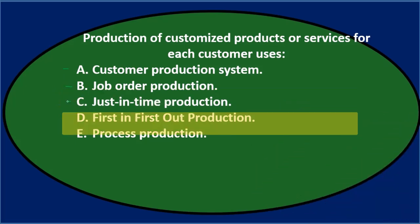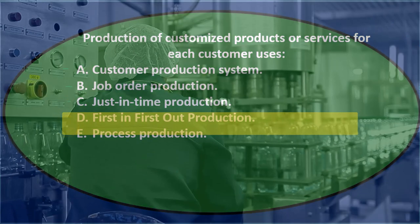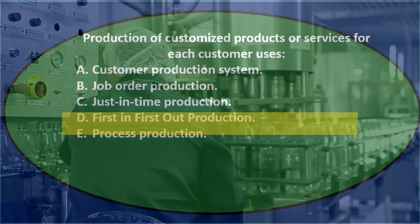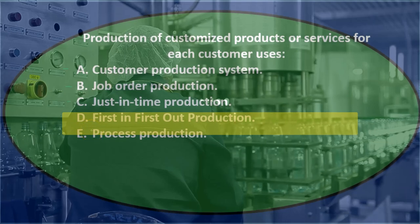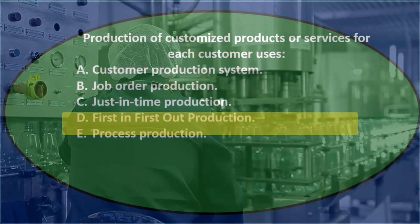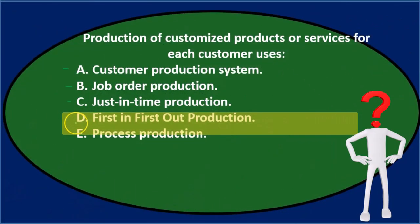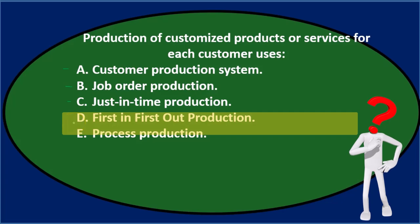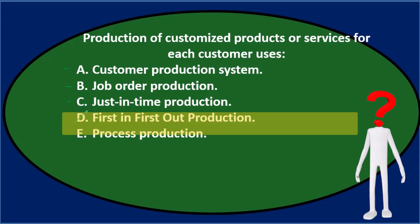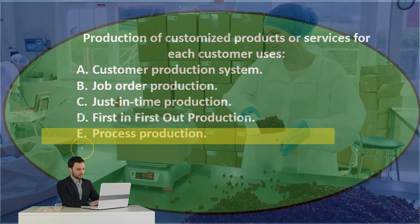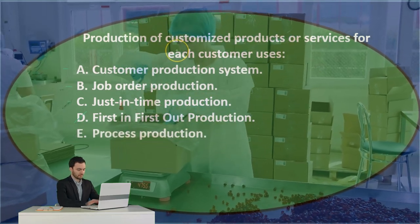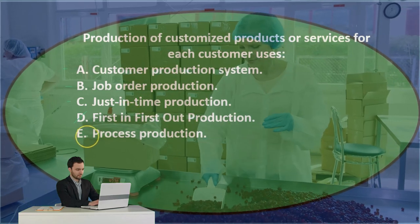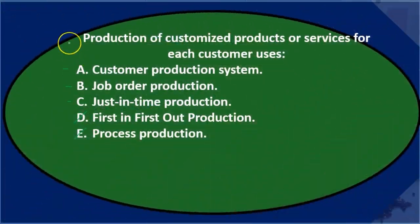D) first-in-first-out production — that's usually how we track costs in a merchandising company going in and out, so it doesn't really apply to the job costing system except for the materials portion only. I don't think it's that. E) process production — that might be like a process cost system, but we're doing customization, so I don't think it's a process cost system.